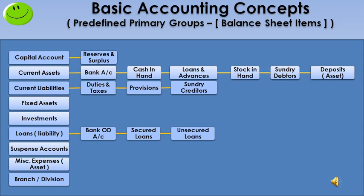First, capital account — it is a primary group. Whoever wants to start a business, industry, or retail shop must invest money. That investment is called capital amount. Next, reserves and surplus — it is a subgroup of capital account. The company sets aside some portion of cumulative profit to meet unpredicted expenses, purchase new assets, or pay dividends to shareholders. This money is under the reserves and surplus subgroup.